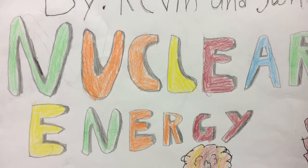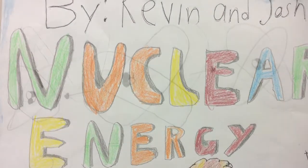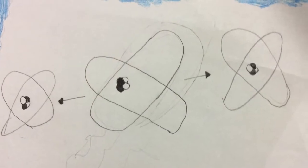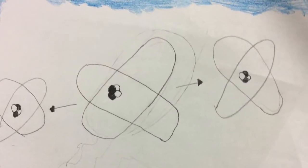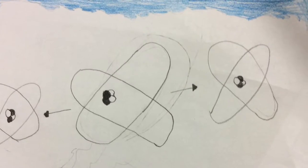Nuclear Energy by Kevin and Joshua. The uranium atoms get split into smaller atoms and create heat which turns into electricity.